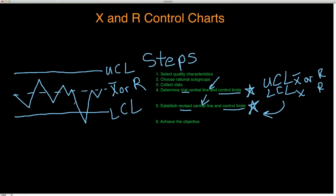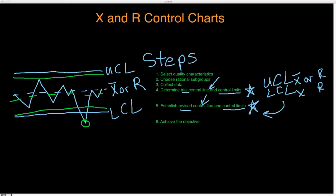What we're going to end up with is some sort of control chart. The first step is to get a trial control chart, and then we will revise that control chart. The goal is to set up these control charts so that the control limits give us a level of certainty that any point falling outside the control limits has an assignable cause. After revising, the control limits will be tightened and the central line will differ from the trial central line.